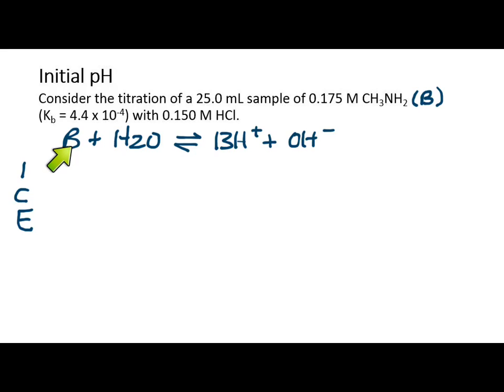Then we can set up an ice table. What's the initial concentration of the base? That's 0.175 molar. These we're going to call zero. What's going to happen? It's going to proceed in the forward direction. So this is going to lose some amount X, and these are each going to gain X because there's no coefficients. So at equilibrium, we get 0.175 minus X for our concentration of B, and these are each going to be X.